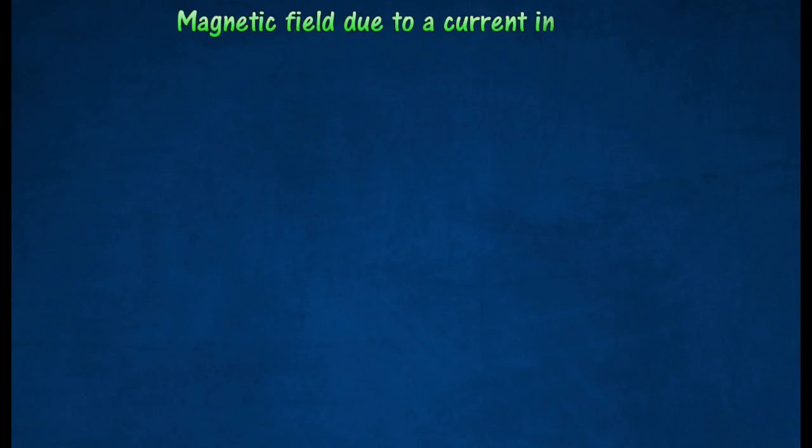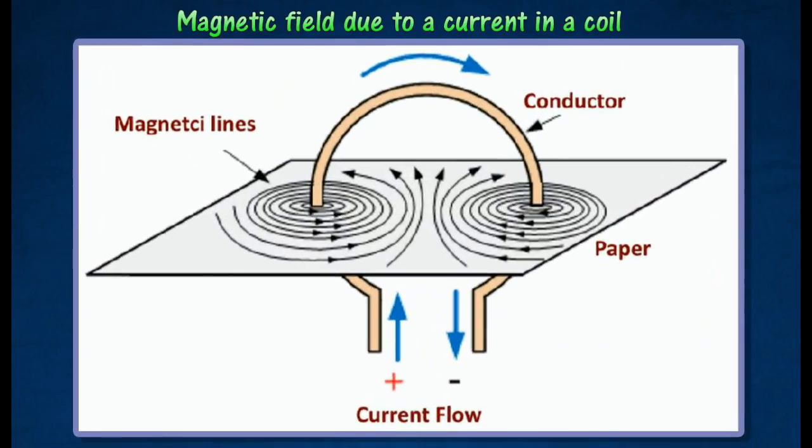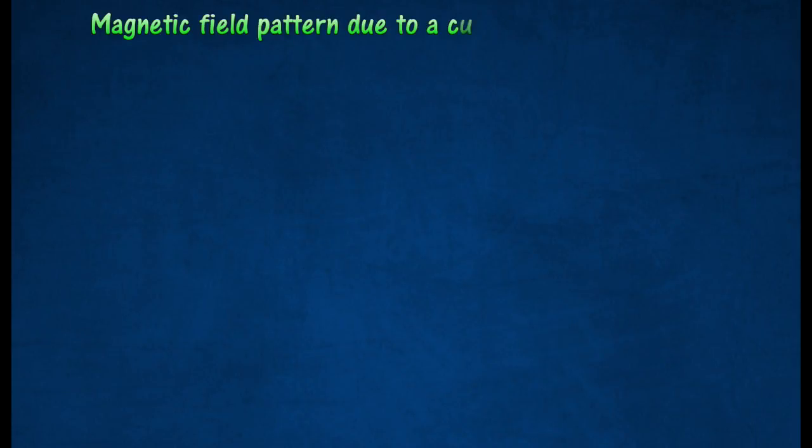The figure shows the magnetic field pattern due to a current in a circular coil. At the center of the coil, the field pattern is straight and at right angles to the plane of the coil.